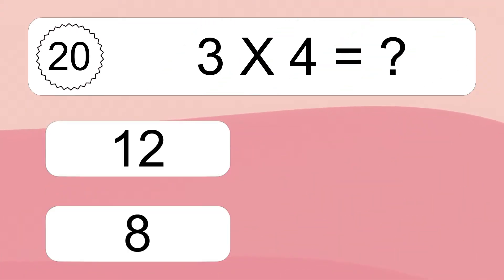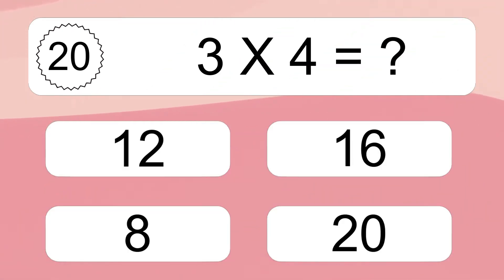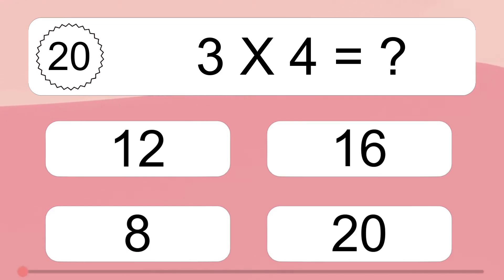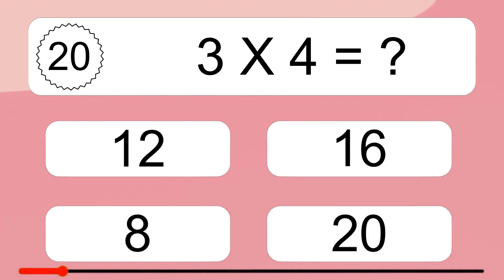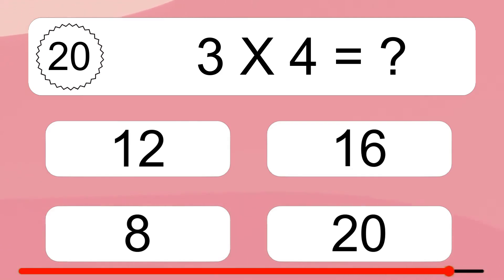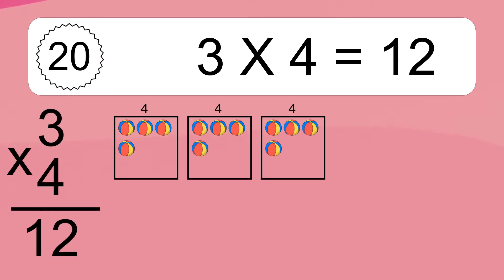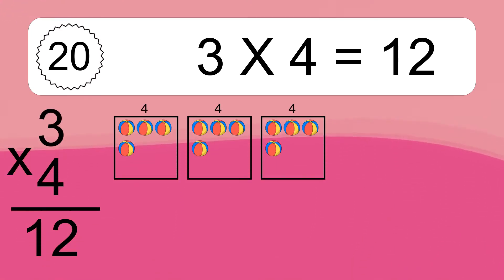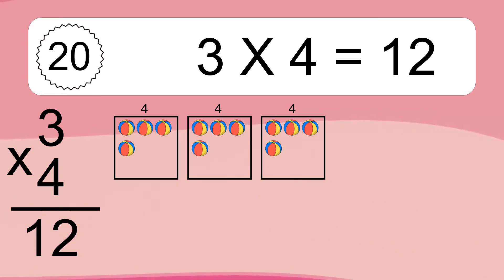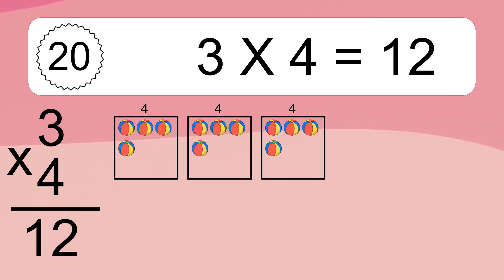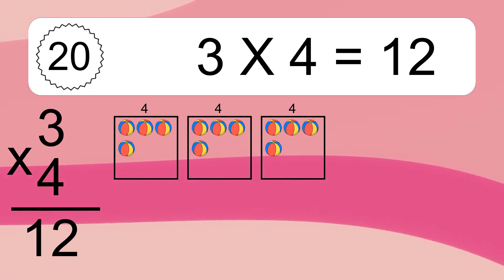Three times four equals what? Three times four equals 12. We have three boxes, and each box has four colorful balls inside. If you count all the balls in all the boxes together, you will have three times four balls. This equals 12 balls.